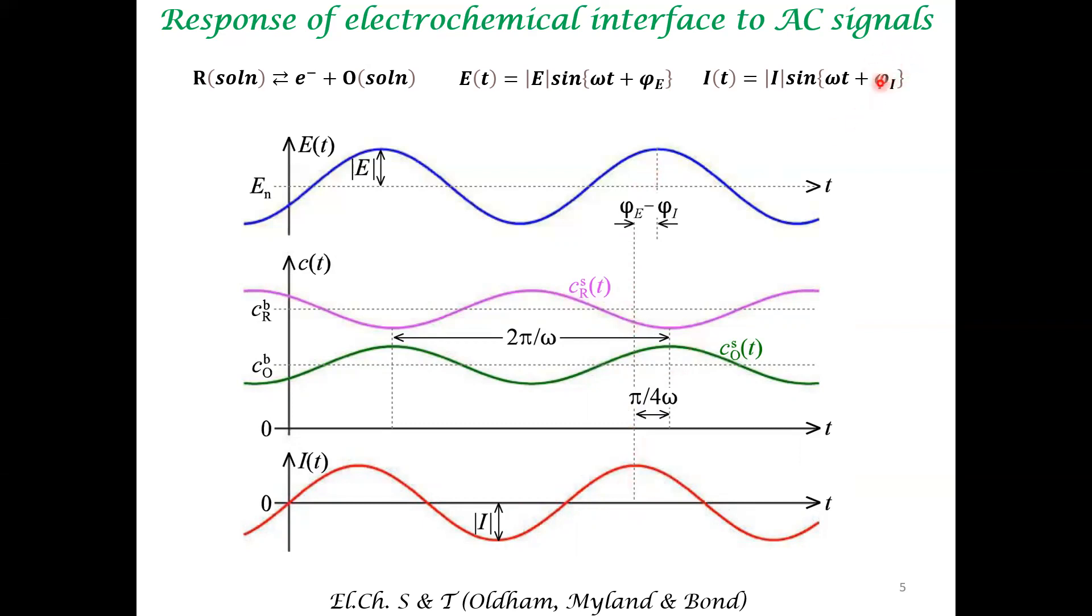But even though this variation has the frequency omega, there can be a phase difference between this signal and these signals. So the phase of these periodic signals is different from the phase of the electrical potential variation or electrochemical potential variation. So that is important to understand.